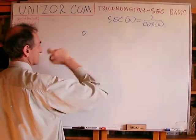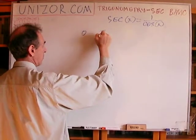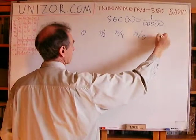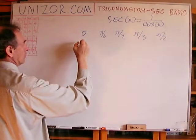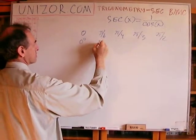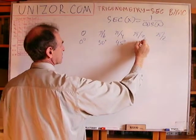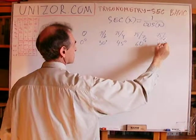So, basic angles: 0 radians, pi over 6, pi over 4, pi over 3, and pi over 2, which is 0 degrees, 30 degrees, 45 degrees, 60 degrees, and 90 degrees.